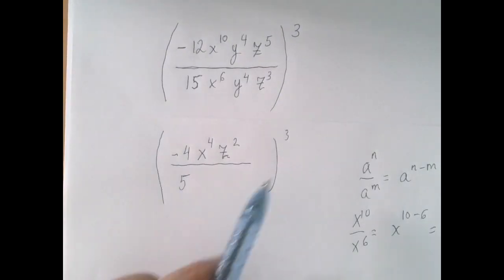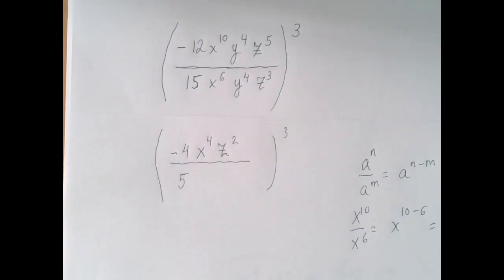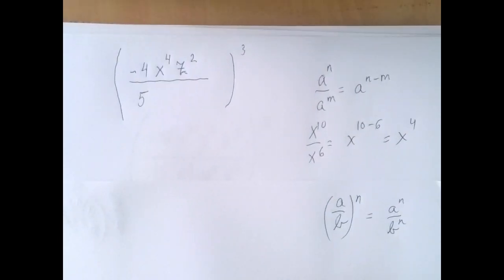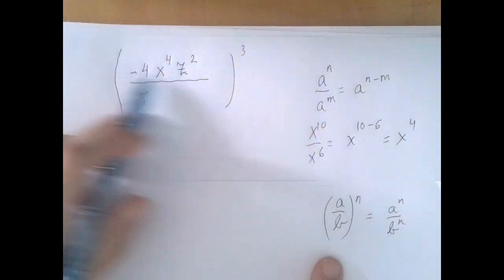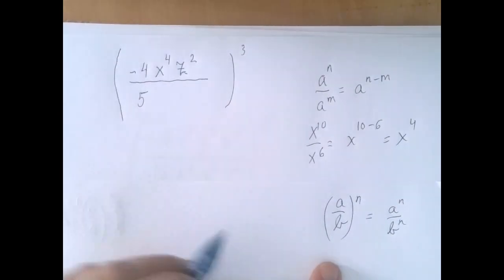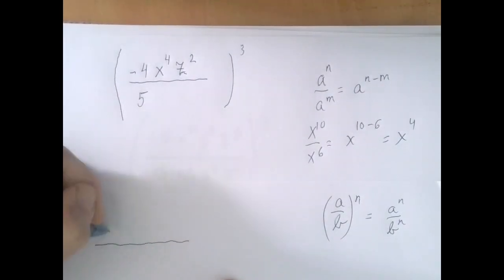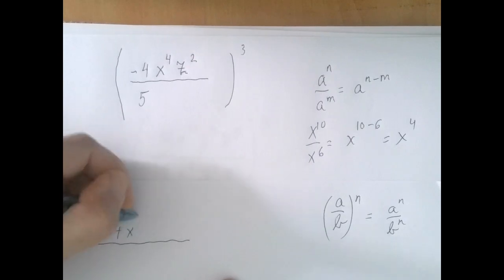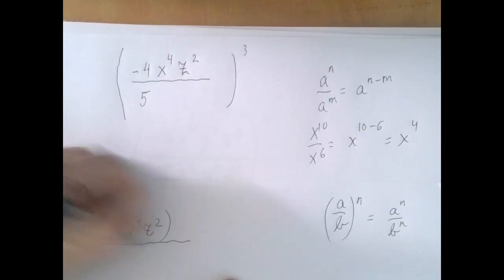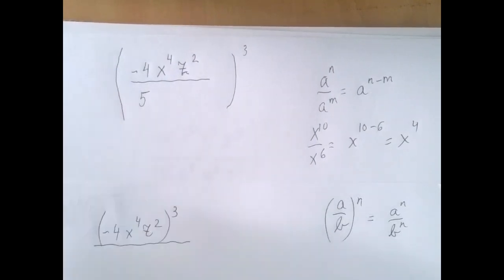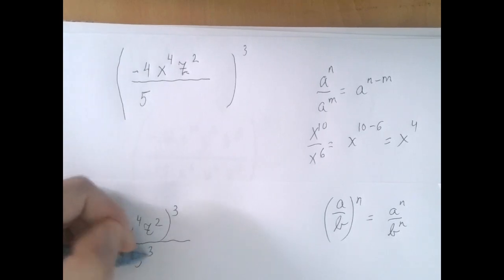So this is a much simpler expression to raise to the third power. Next, using this rule of exponentiation, when this entire quotient is raised to the third power, we can do it with numerator to the third power divided by the denominator to the third power. So that's negative four x to the fourth z squared to the third power divided by five to the third power.